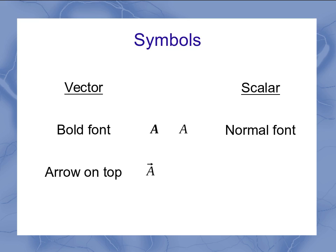If you want to make sure that it's absolutely clear that you're talking just about the how much, we can use the absolute value signs. And the absolute value signs means I'm talking about the magnitude, or how much of quantity a I have without any regard to the direction. So when you see the arrow on top, you know it's a vector. If you see the absolute value signs, you know it's a scalar.